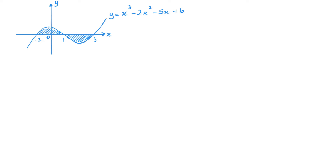If you're not given the sketch, you need to have an idea of what the graph is going to look like. Because here I've got an area above the x-axis and an area below the x-axis. The one above is going to give me a positive value, and the one below will give me a negative value. So to do this kind of question, I need to do them separately.